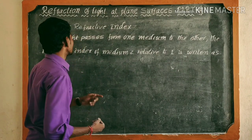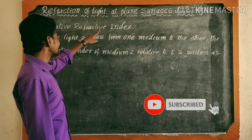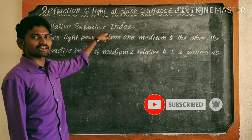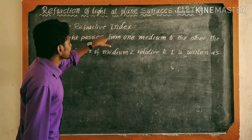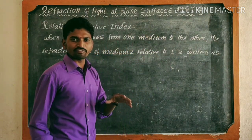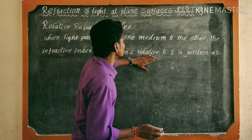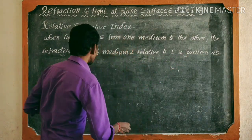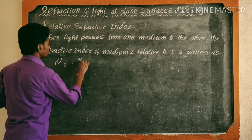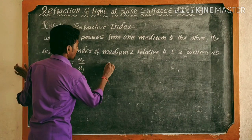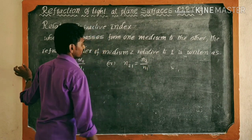Okay friends, in the refractive index, the second classification is the classifier into two types: absolute refractive index and relative refractive index. The objective refractive index is already completed. So what is the relative refractive index? When light passes from one medium to another medium, the refractive index of medium two relative to one is written as μ₁₂ = μ₂/μ₁, or n₂₁ = n₂/n₁.